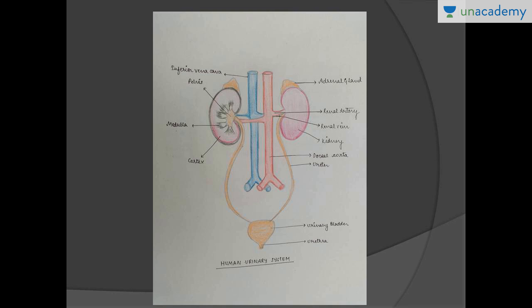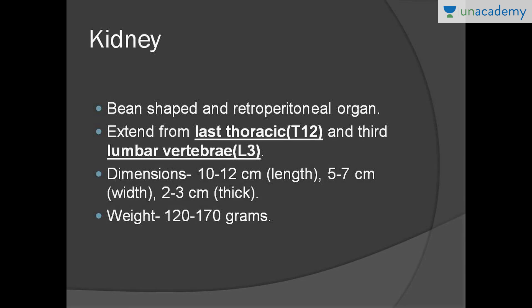Now let's get to the point and start with the most important organ — the kidney. The kidney is the most important organ of the human excretory system because it is involved in the process of excretion and urine formation.